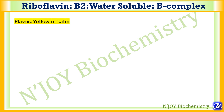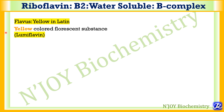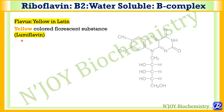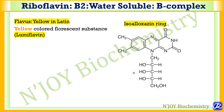Flavus means yellow in Latin, and on exposure to UV light it gives yellow-colored fluorescence, that is lumiflavin. This is the structure of riboflavin. It has a three-ring cyclic structure. It is 6,7-dimethyl, 9D-ribitol isoalloxazine, and at the N9 position this ribitol is attached, which is the alcohol of ribosugar.